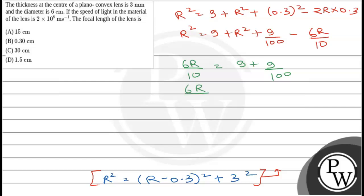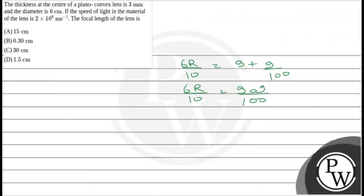So it is 6R/10 = 909/100. Now this R, which is the radius of curvature of the plano-convex lens, comes out to be 909/60, which equals 15.15 centimeter.